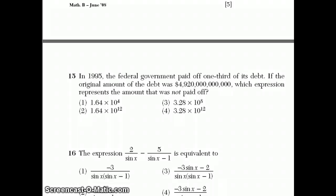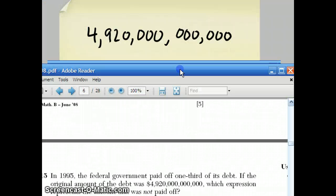Question 15 says that in 1995, the government paid off one-third of its debt. If the original amount of the debt was $1,920,000,000,000,000, which expression represents the amount that was not paid off. You see they've got this word, not here, and that's real important. You want to read the question carefully. Looks to me like these two choices here are related to how much was paid off. So, just be careful about that. The answer I already know is either going to be 3 or 4. Let's look at this big number.